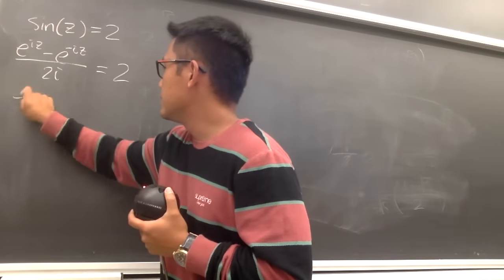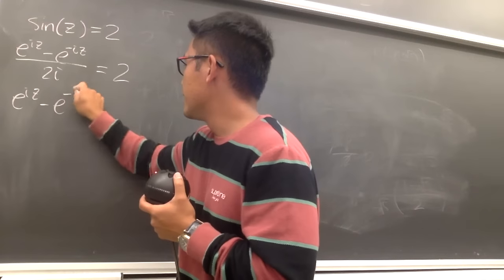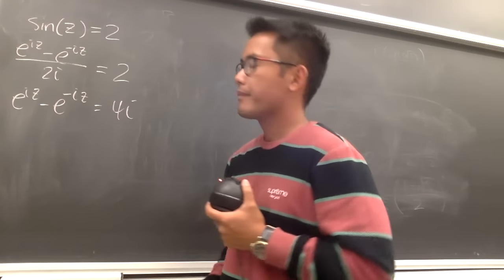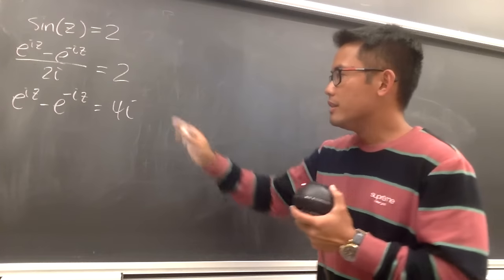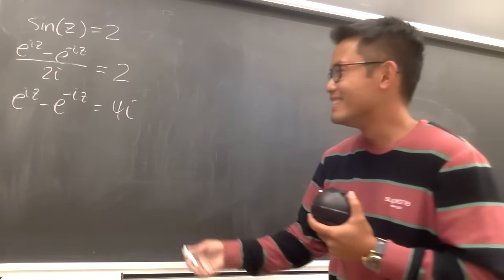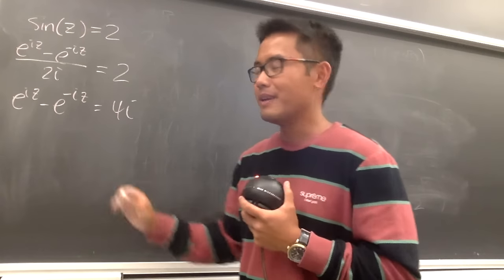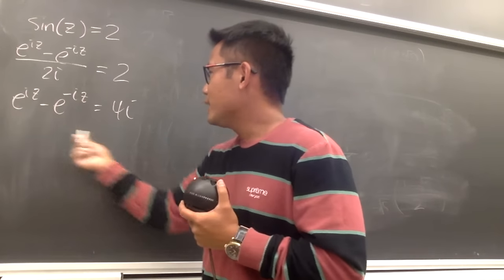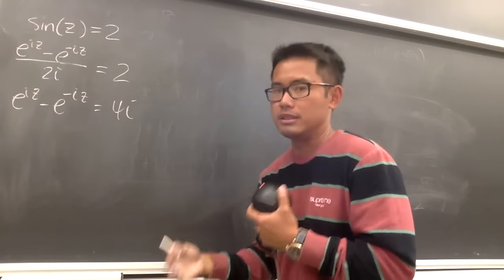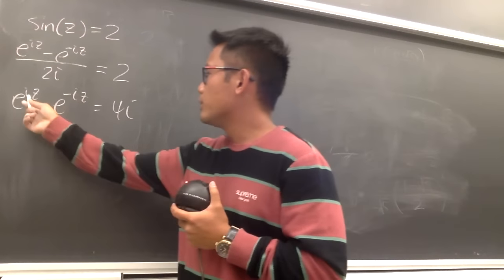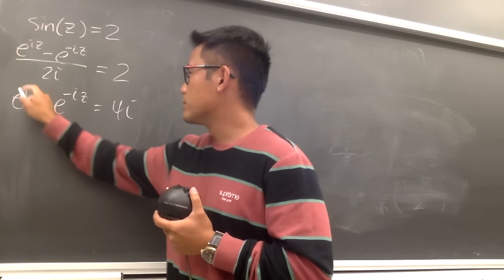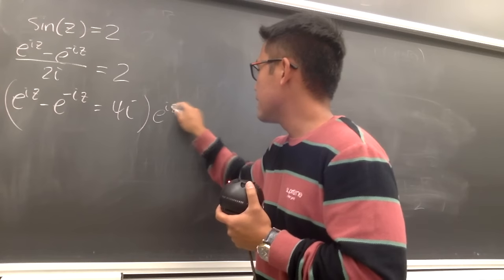This is very similar to the inverse sinh. I'm going to solve for z, because z is the input — if I can find the input, that's the solution. We have e to the iz and e to the negative iz, so if we multiply everything through by e to the iz, we can simplify.